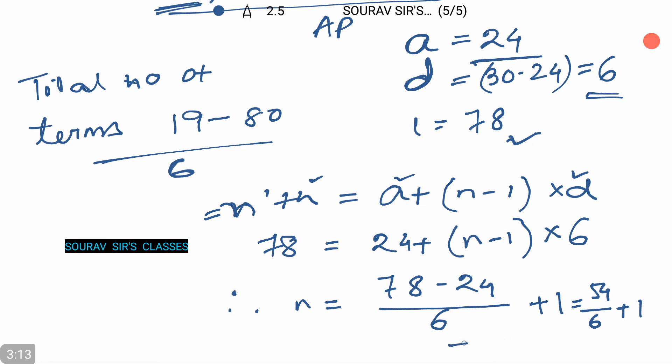And the value is 9 plus 1, that is 10. And this is our answer. So there are exactly 10 digits between 19 and 80 that is divisible by 6.